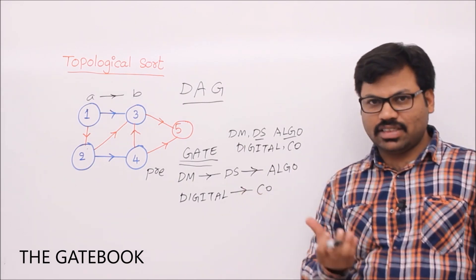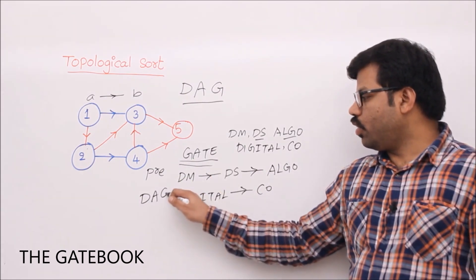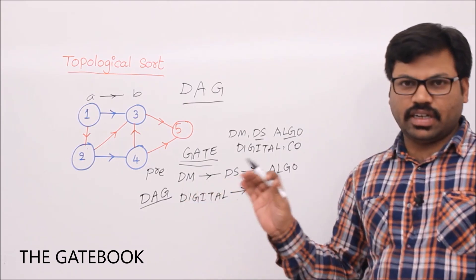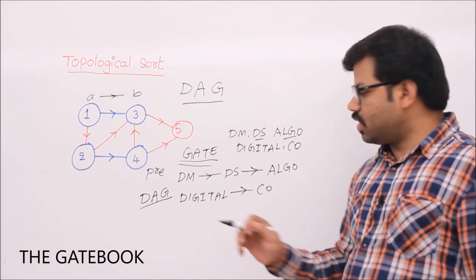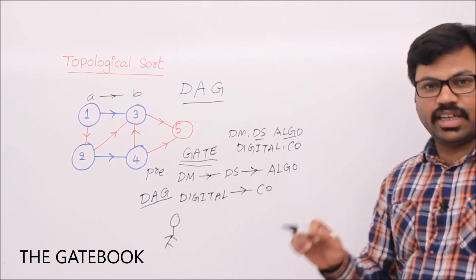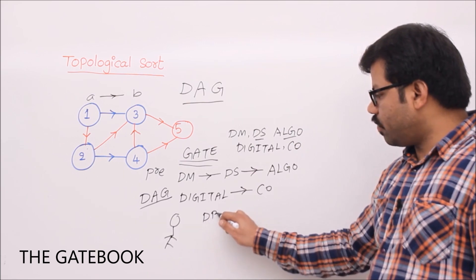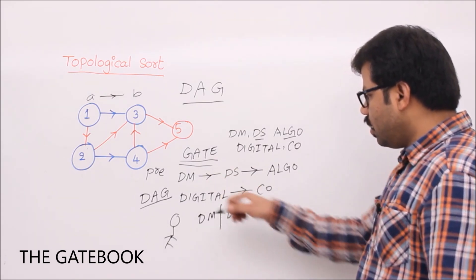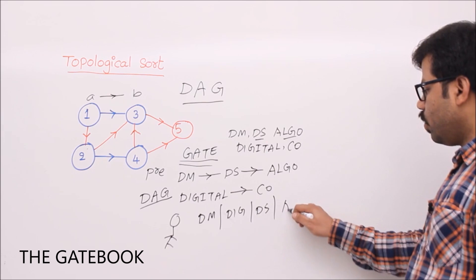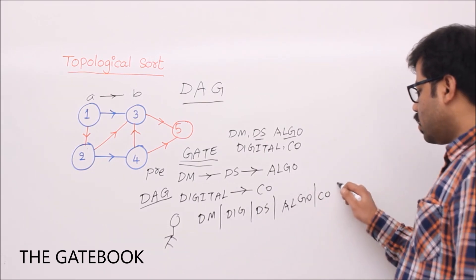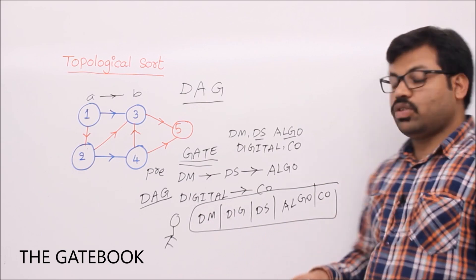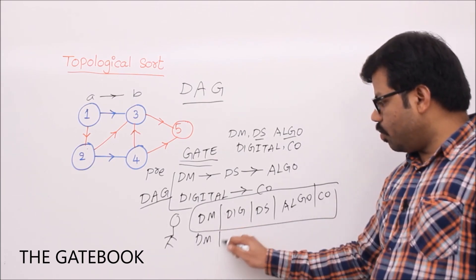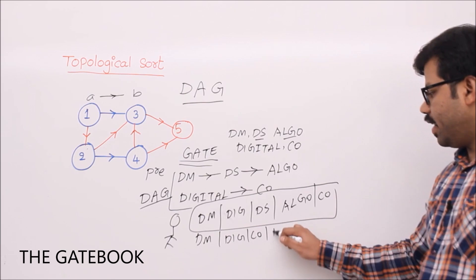Your requirements can be imagined as a DAG. Now given this graph, topological sort means: what is the order in which you want to study? However, only one particular order cannot be enforced — there can be multiple. For example, Raju wants to prepare for GATE. One valid order: discrete maths, then digital, then data structures, then algorithms, then CO. This is called sorting the requirements — topological sort.